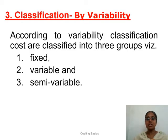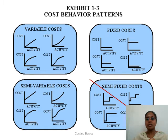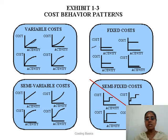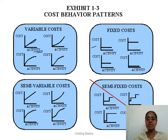The next classification is based on variability — fixed, variable, and semi-variable cost. For fixed cost, even at zero production there is some cost involved; it does not start at zero. For variable cost, it starts at zero and increases proportionately with activity. Semi-variable cost does not start at zero because it has a fixed component, but it also changes as activity changes, unlike purely fixed cost.